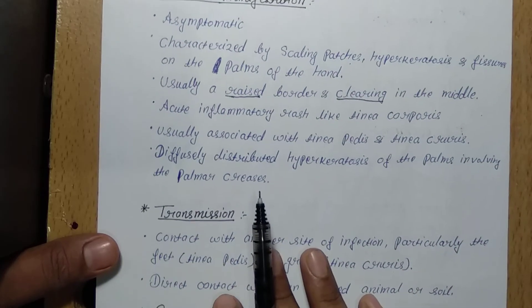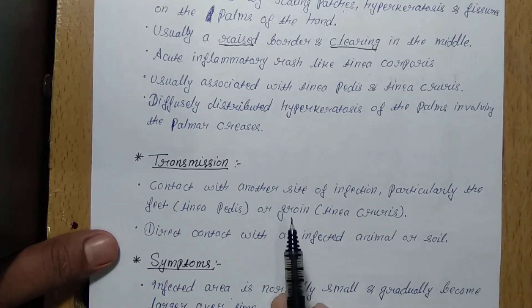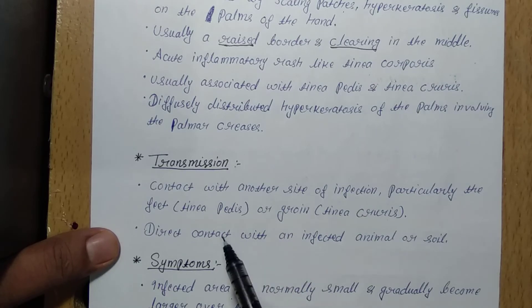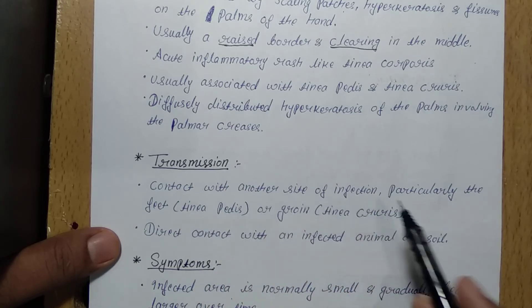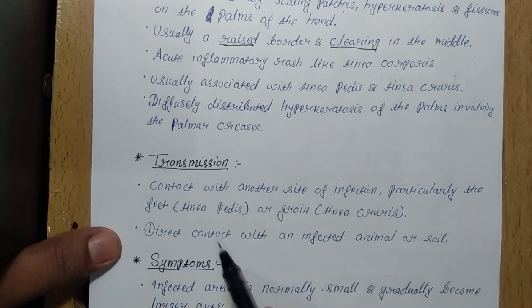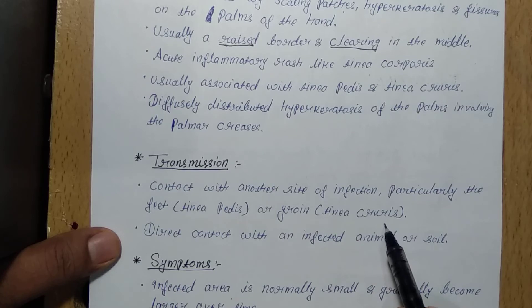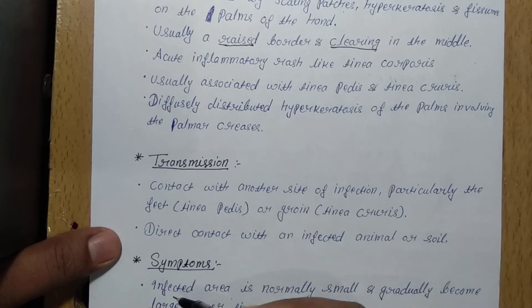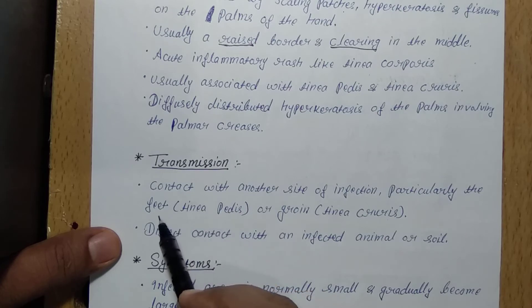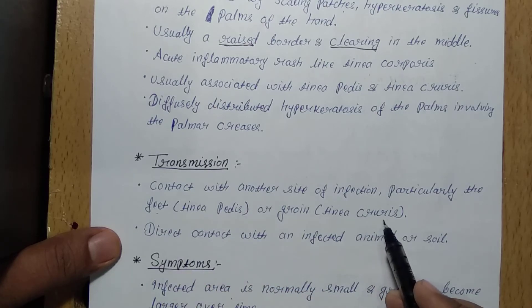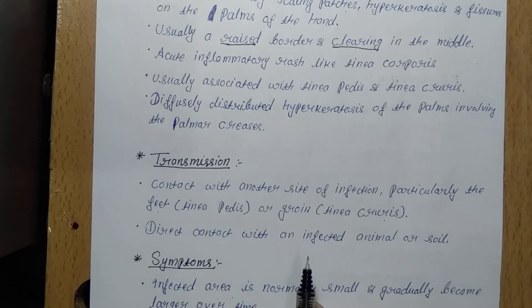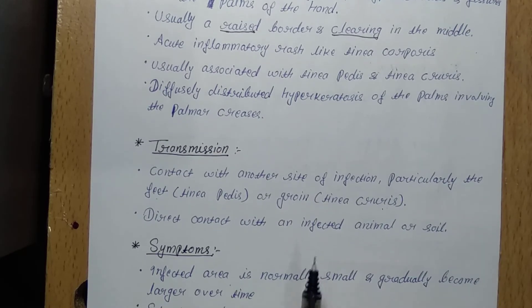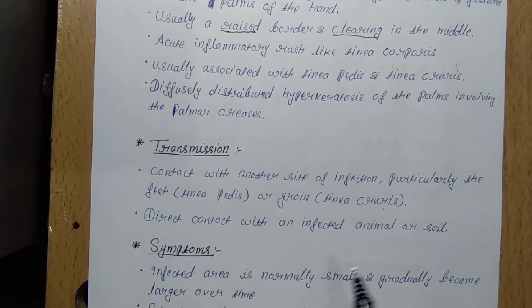What is the transmission of tinea manuum? Tinea manuum is transmitted by contact with another site of infection. Persons suffering from tinea pedis or tinea cruris may also develop tinea manuum. Tinea pedis most commonly occurs on the feet and tinea cruris in the groin area. Tinea manuum is also transmitted by direct contact with an infected animal.